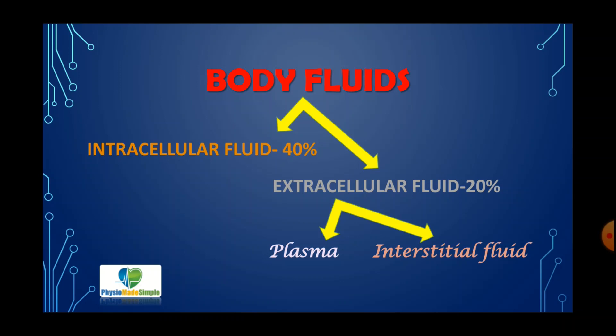Extracellular fluid is divided into two parts: plasma — otherwise known as intravascular fluid — and interstitial fluid. Interstitium refers to the spaces in between the cells, and the fluid in those spaces is called interstitial fluid. Plasma is the fluid part of blood, which transports nutrients, oxygen, carbon dioxide, etc. Blood contains RBCs, WBCs, and platelets as the cell component, and the fluid part is called plasma.